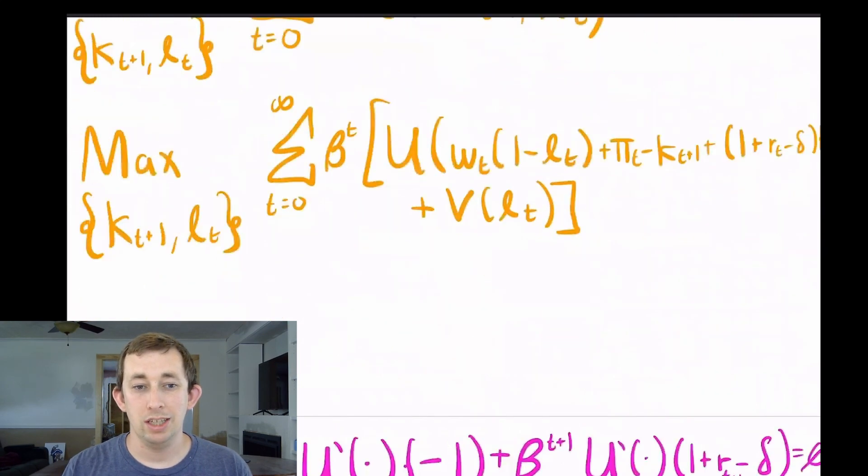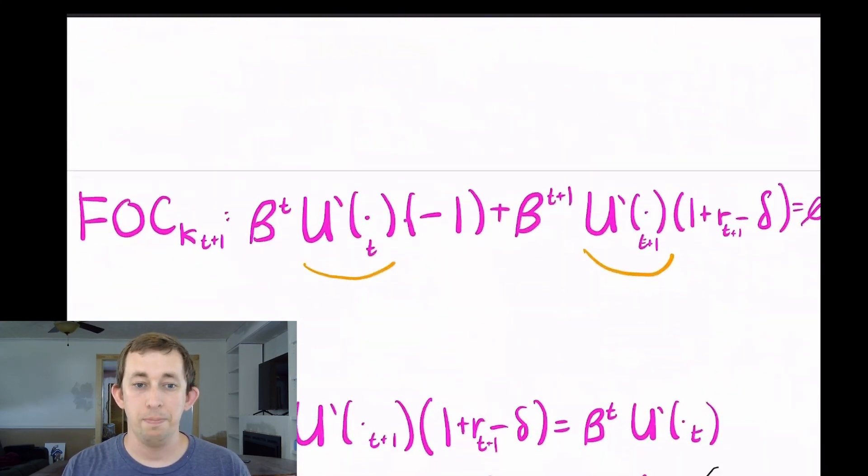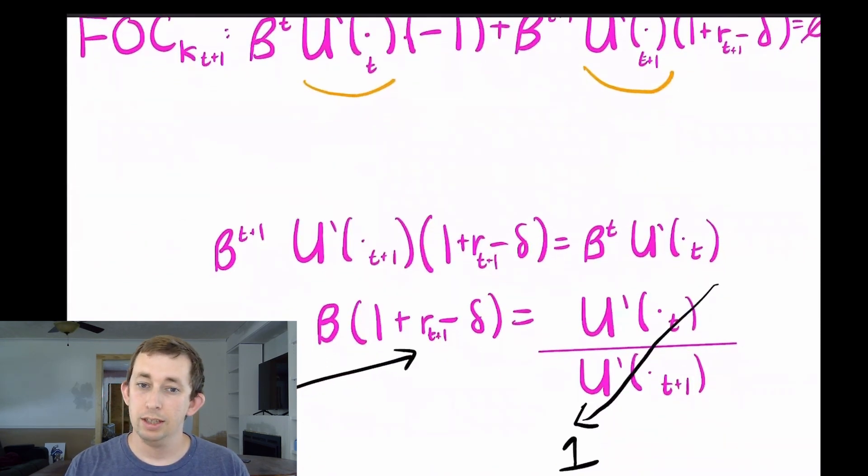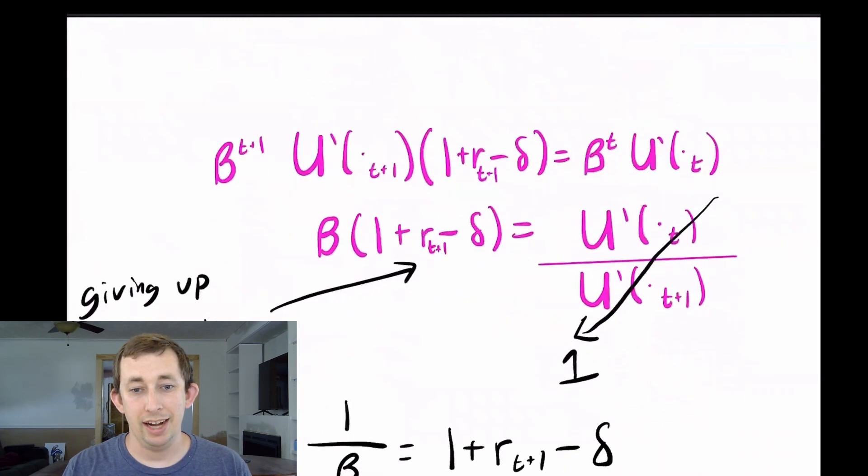Now the first order conditions are just for capital tomorrow and labor. Notice when I take the first order condition of capital tomorrow, in today's first order condition, kt plus one shows up as tomorrow's capital. And in tomorrow's part of the utility function, tomorrow's capital is today's capital. So we have the marginal utility of stuff today and the marginal utility of stuff tomorrow all in the same first order condition. We can use that to our advantage because we know in equilibrium, most people are going to consumption smooth if we assume people are risk averse, which is a very common assumption.